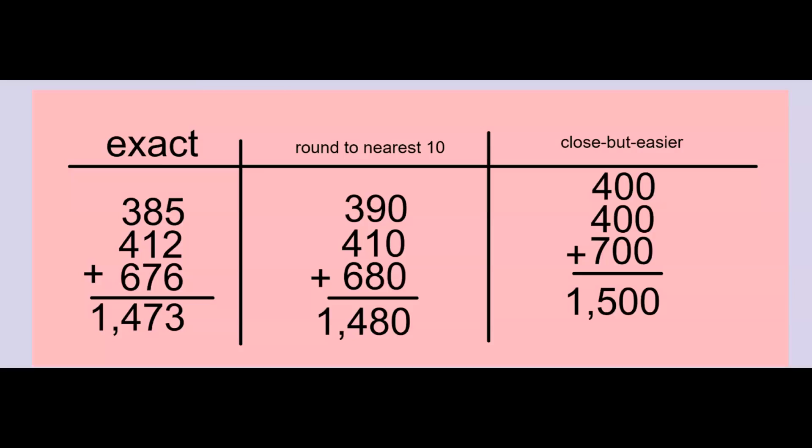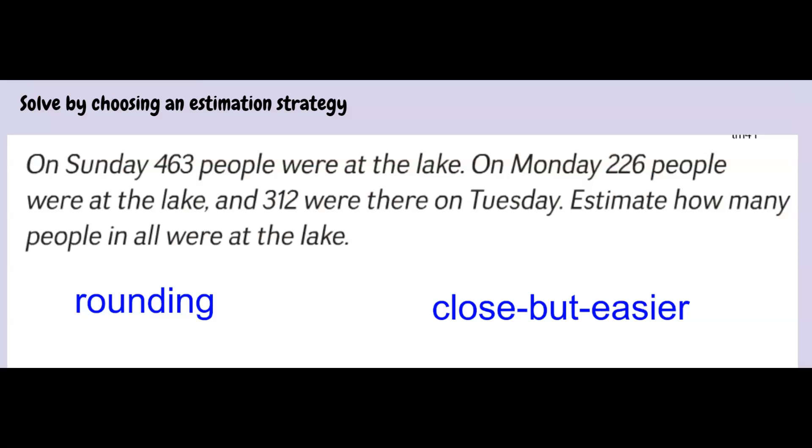Let's take a look. On Sunday, 463 people were at the lake. On Monday, 226 people were at the lake, and 312 were there on Tuesday. Estimate how many people in all were at the lake. You can make an estimate by rounding or by choosing close but easier numbers.